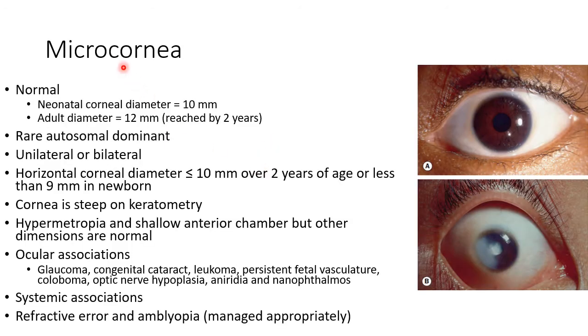First let us discuss about microcornea. The normal neonatal corneal diameter is 10 mm and the normal adult corneal diameter is 12 mm, which is reached by 2 years of age.